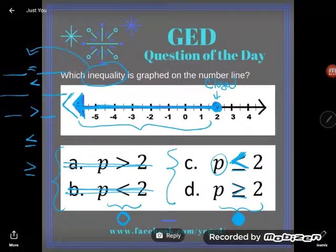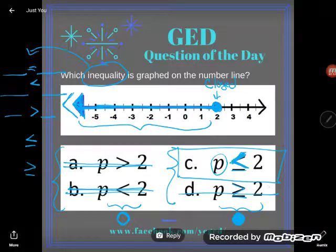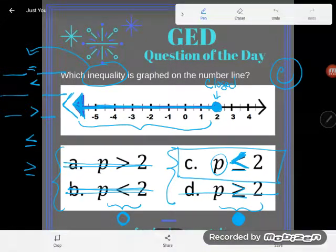And 2 itself are possible solutions to p is less than or equal to 2. And this is the correct answer, so C is the correct answer here. If you have any questions about this or any other GED math topic, be sure to drop it in the comments. I'll do my best to answer it.